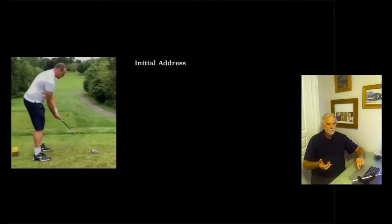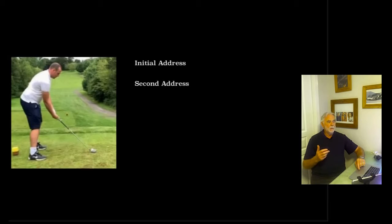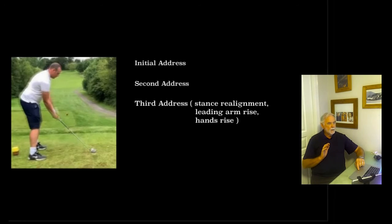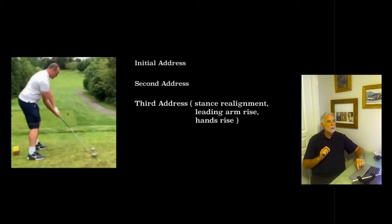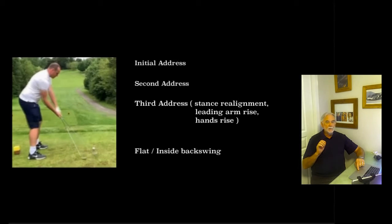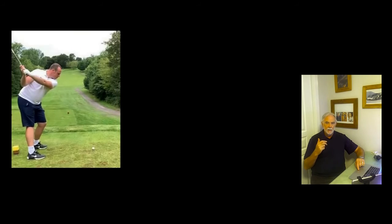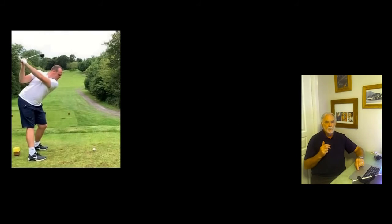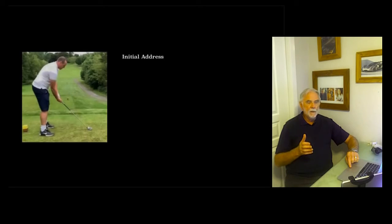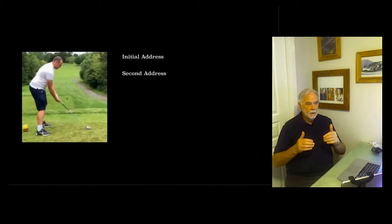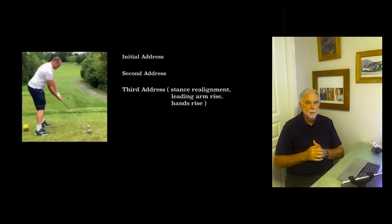So he has an initial address, a second address, and in fact a third address before he actually pulls the trigger and starts the backswing. Now these things by themselves are causing the problem at the top of the backswing where the club shaft is pointing well to the right of the target, resulting in him having almost to throw the right side of the body forward in order to get the club head back to the ball. A lot of this gentleman's issues — and a lot of other golfers' issues — could be fixed by making sure he has the correct stance. Not necessarily closed equals draw or open equals fade, but too closed a stance can result in too flat a backswing, and that can cause major problems when the player is trying to return the club head back to the ball.